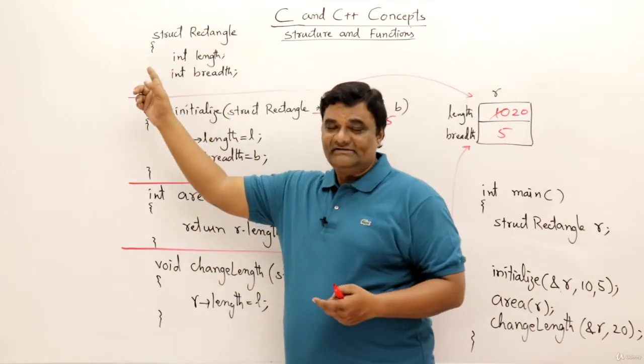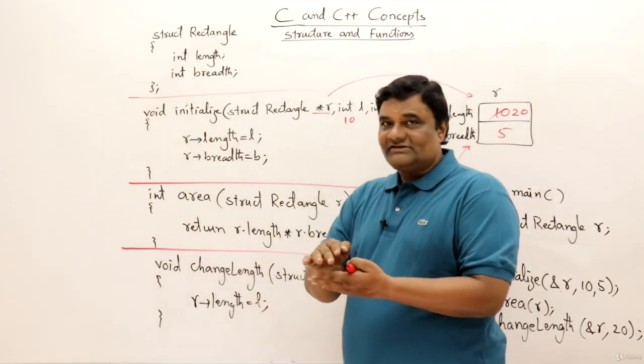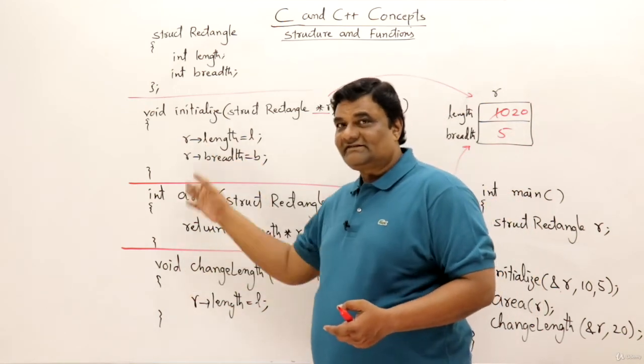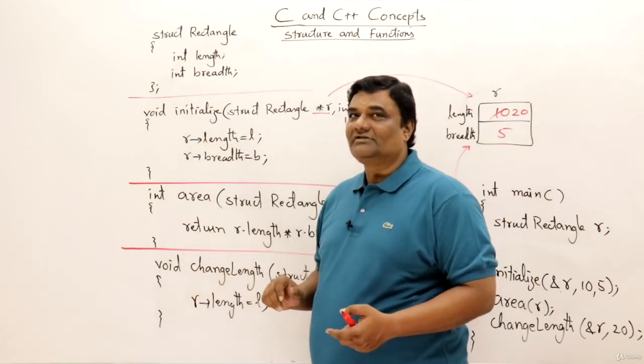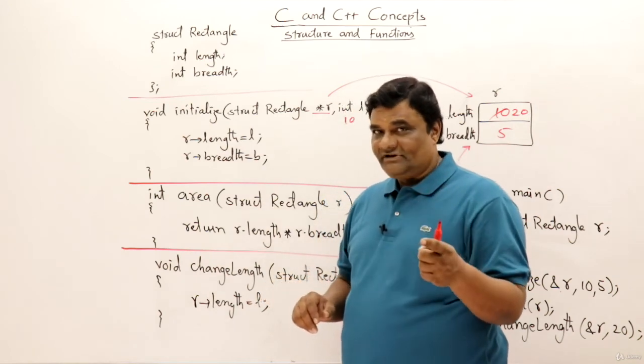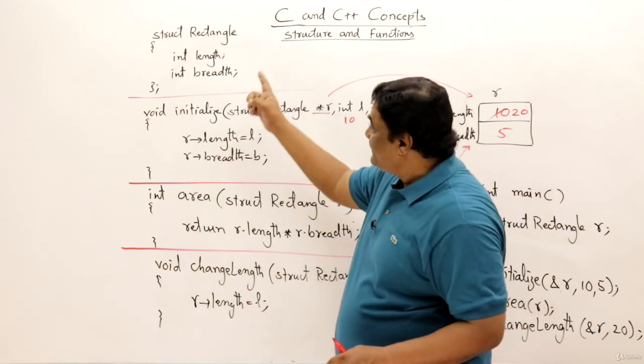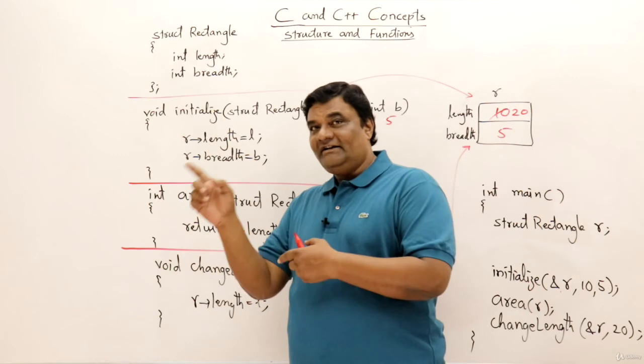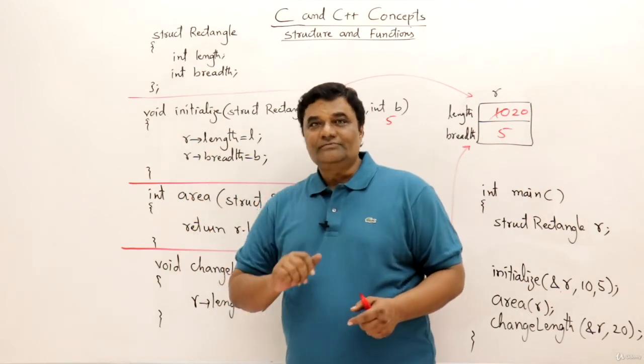Because grouping of data at one place is a structure. Grouping the instructions for performing a task is a function. So this is the style we follow in C language. Then in coming video I will discuss the concept of object orientation. So I will show how to write a class. The same example I will take and the similar code I will modify it as a class and show you.